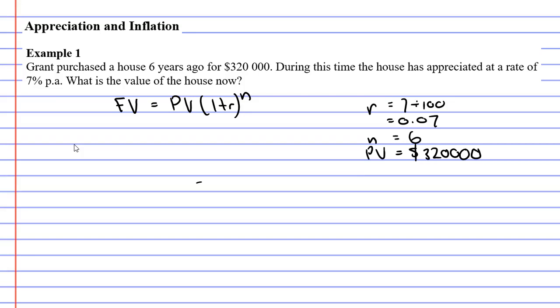So we need to find the future value, which just means the value it will be after the six years. So we're going to write: future value equals present value $320,000 times (1 plus R being 0.07) to the power of 6 for N.